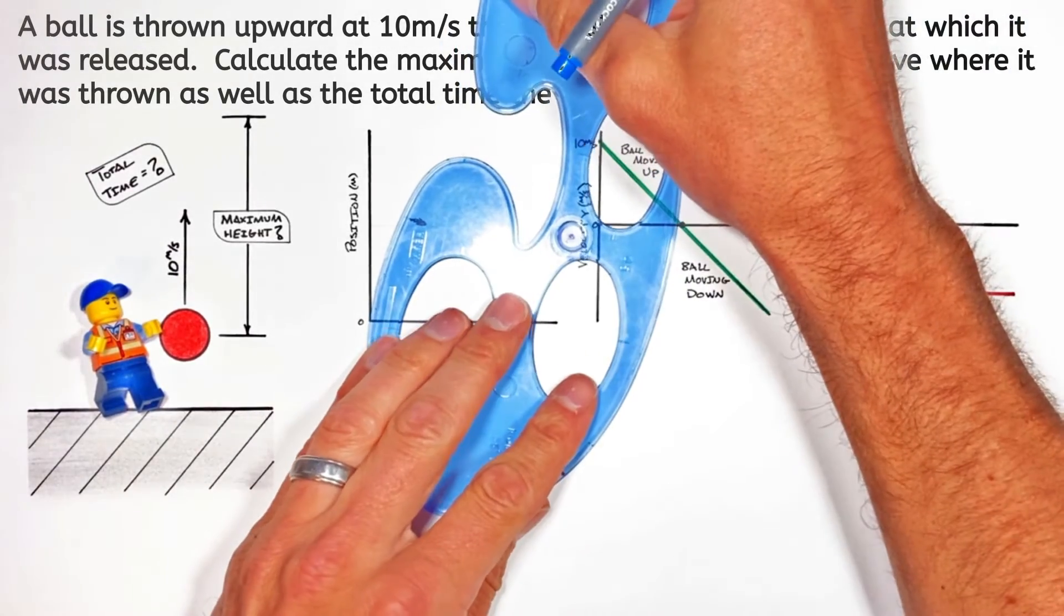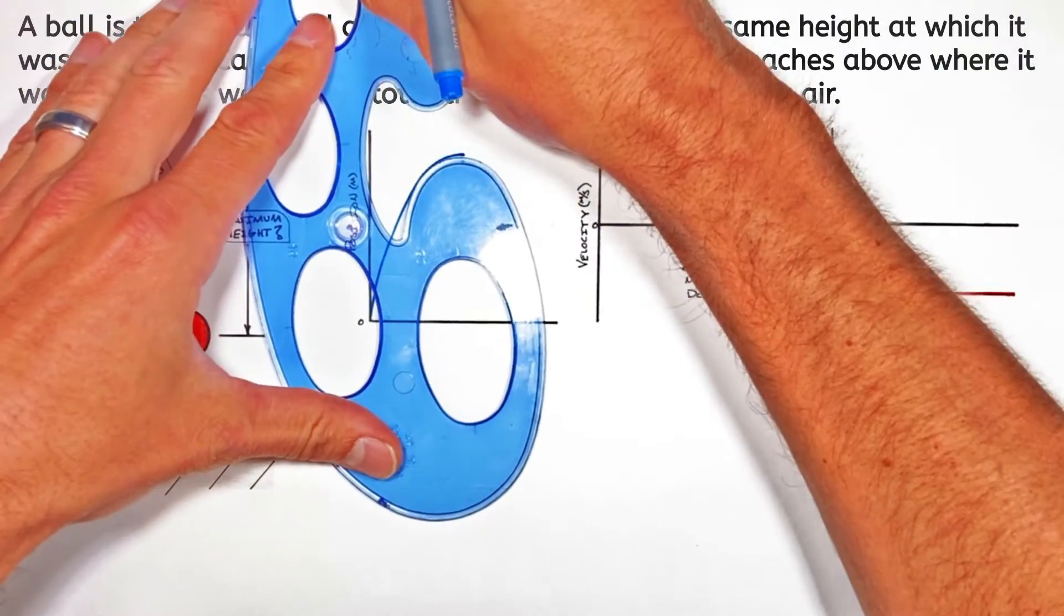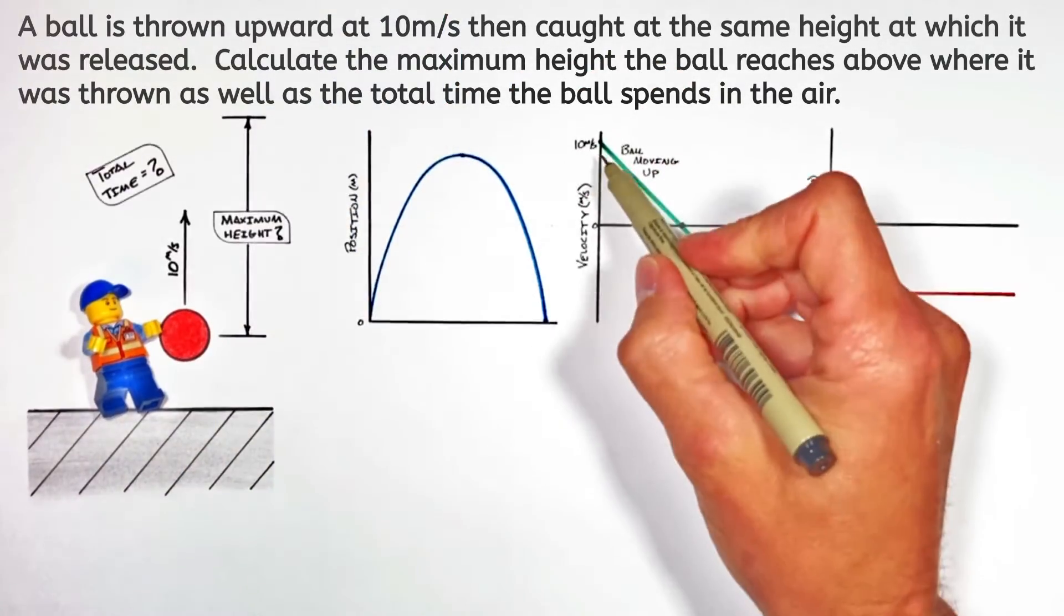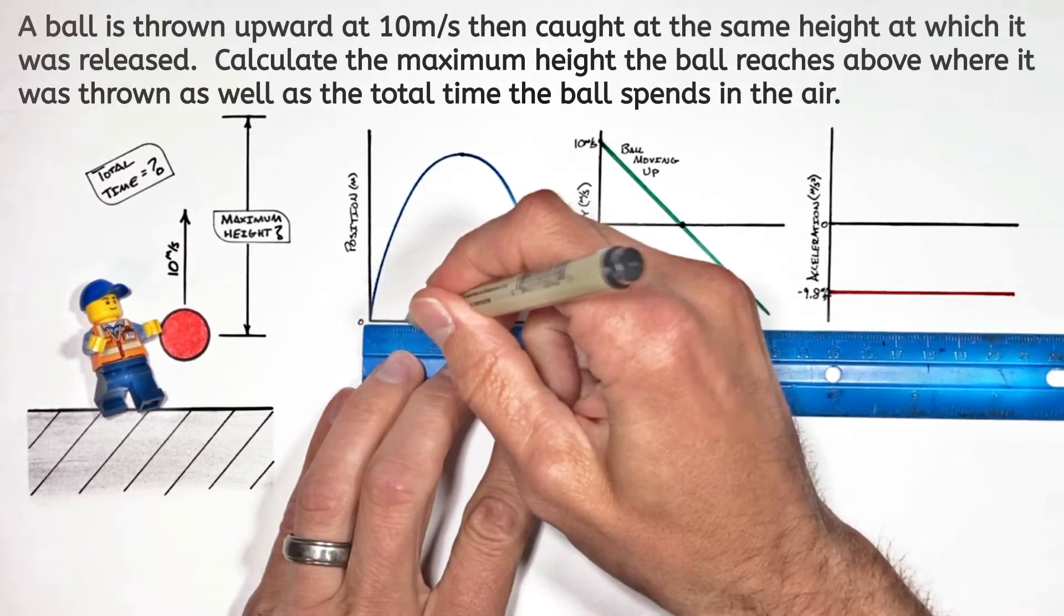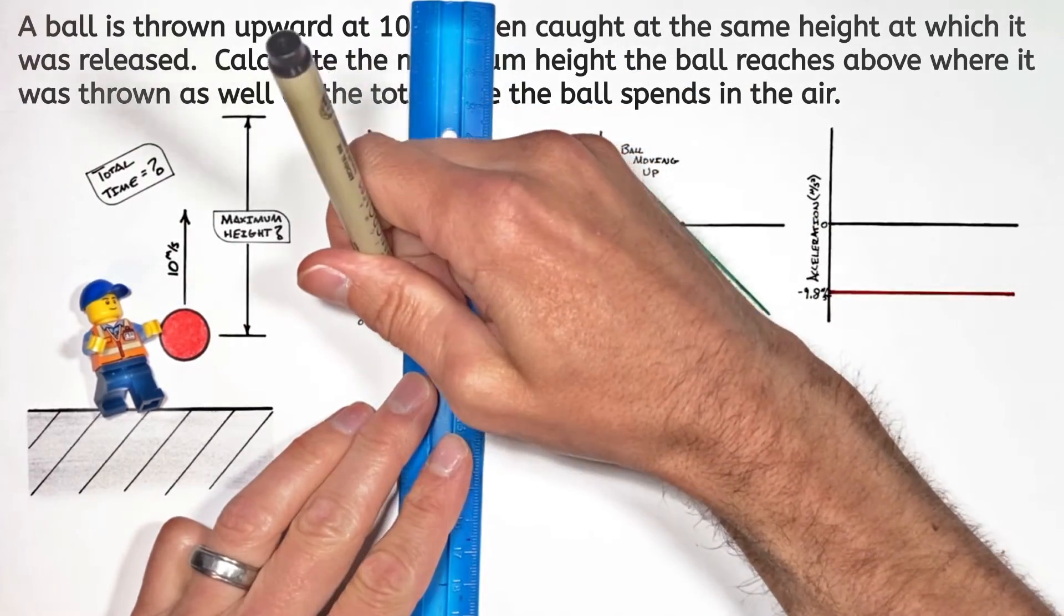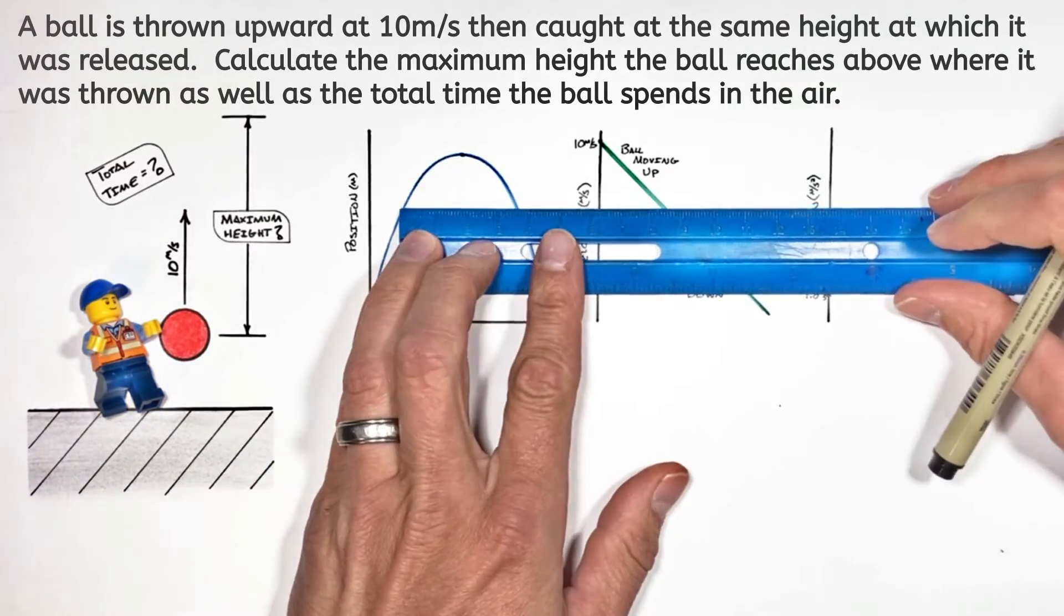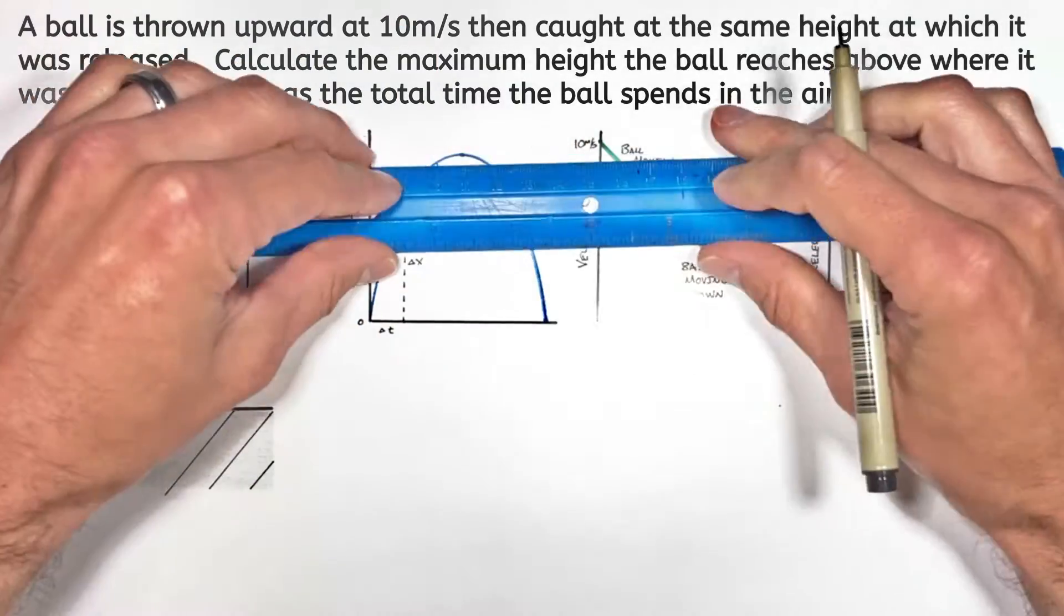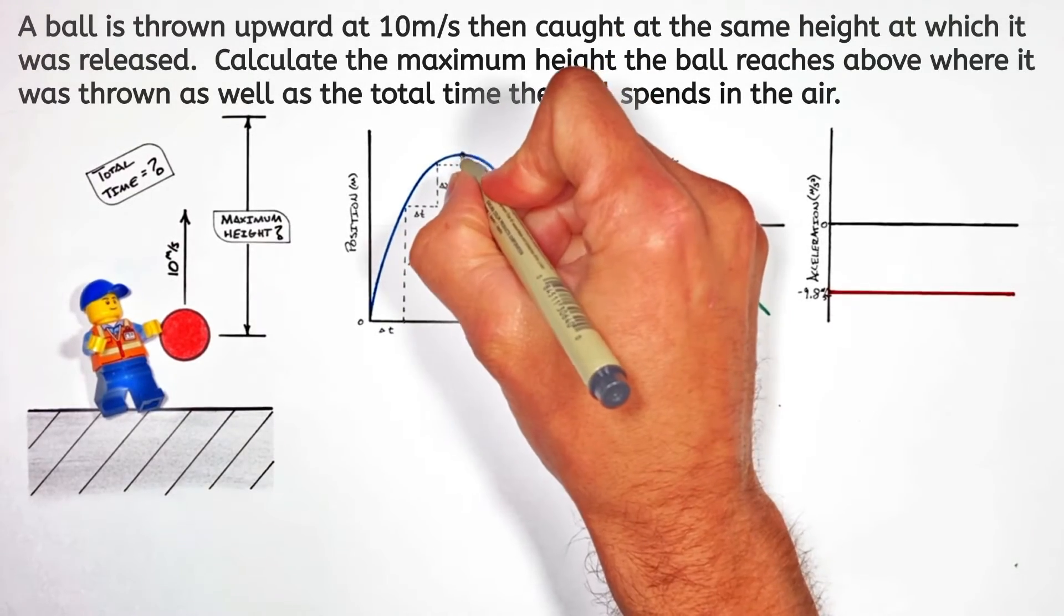Moving on to our position versus time graph, we know the ball is going to go up and then come back down, and that graph is a parabola. The reason being, at first the ball is moving quickly upward so it has a large positive slope, but as time goes on that change in position is going to get smaller and smaller every second until the ball reaches its highest point.